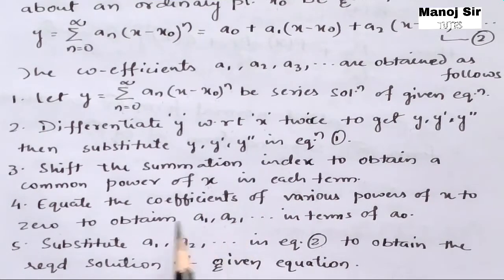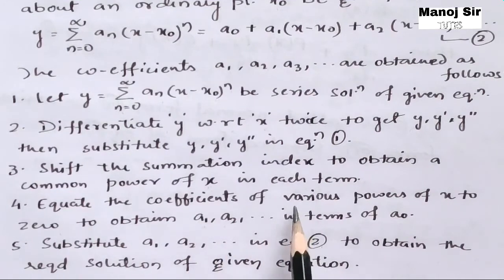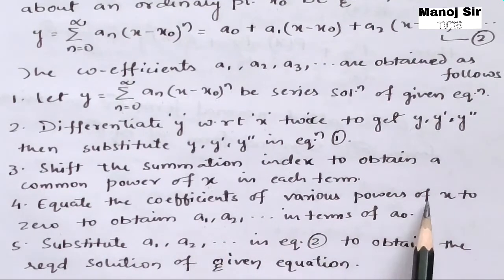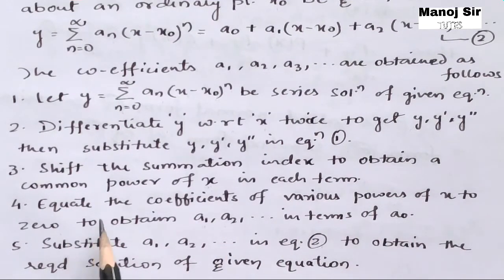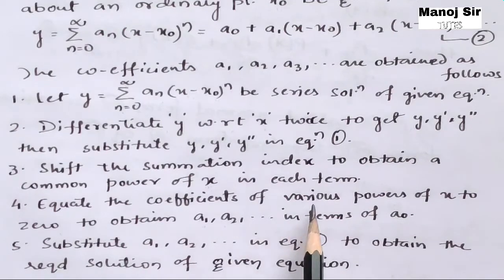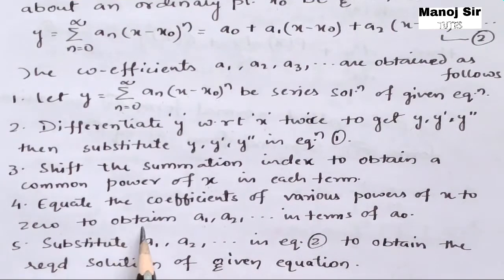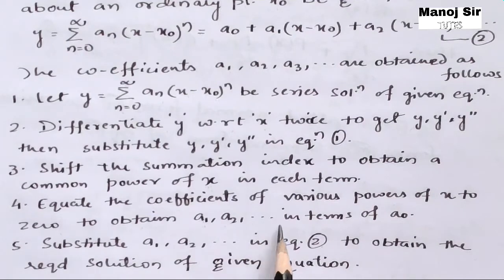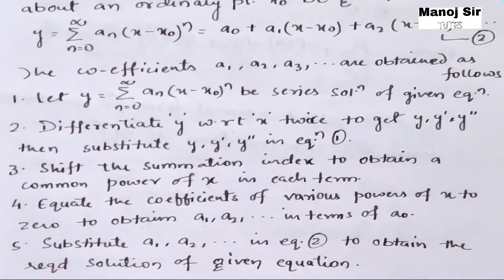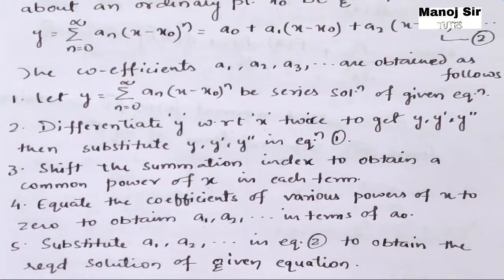Step 4: Equate the coefficients of various powers of x to zero in order to obtain a1, a2, and so on in terms of a0.